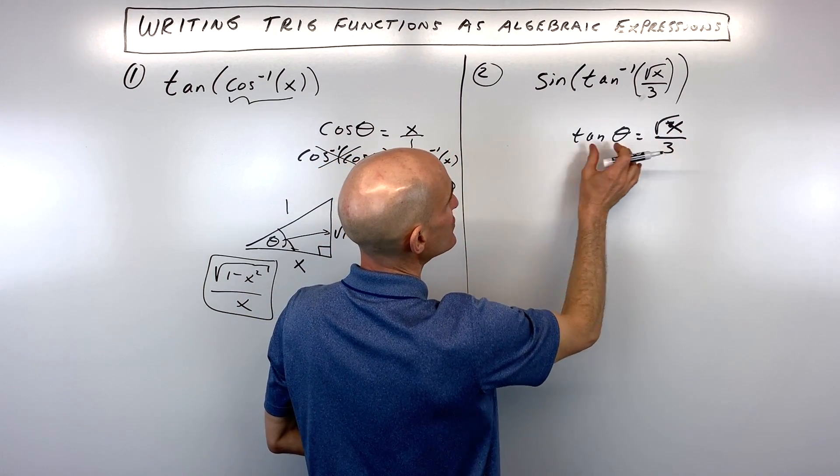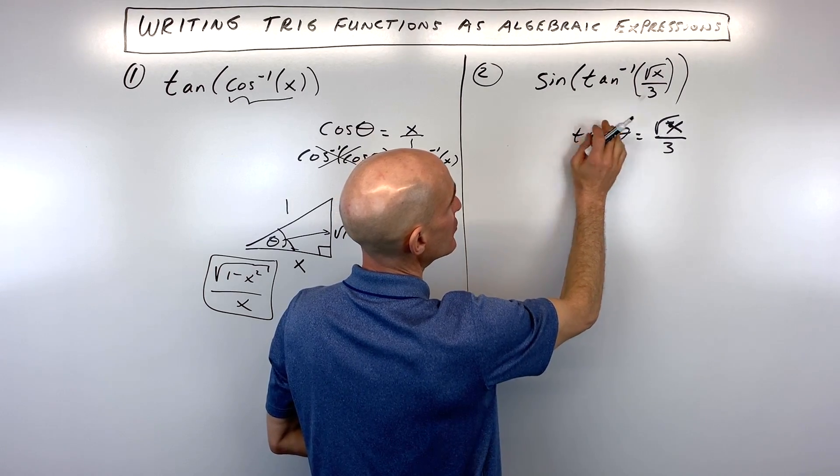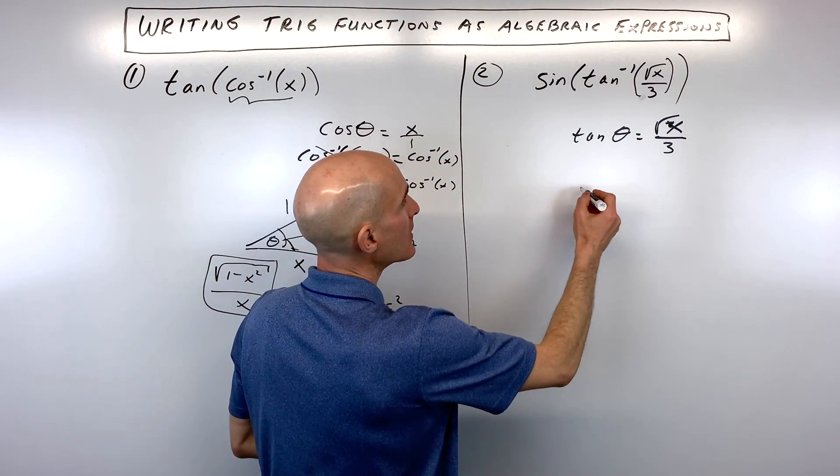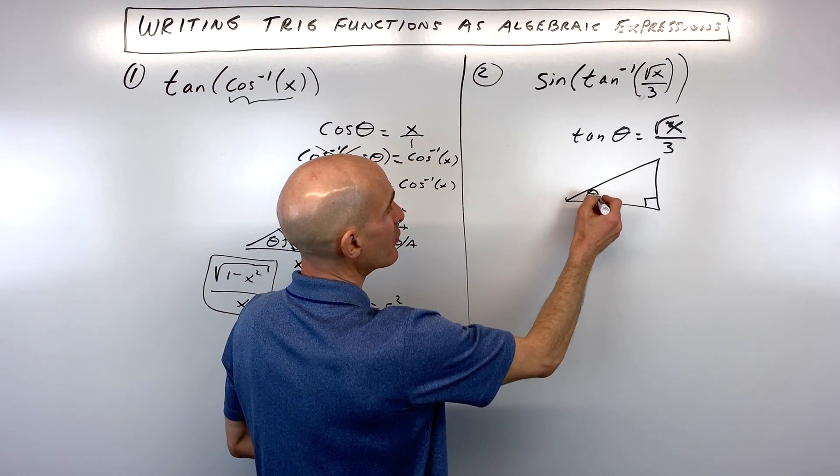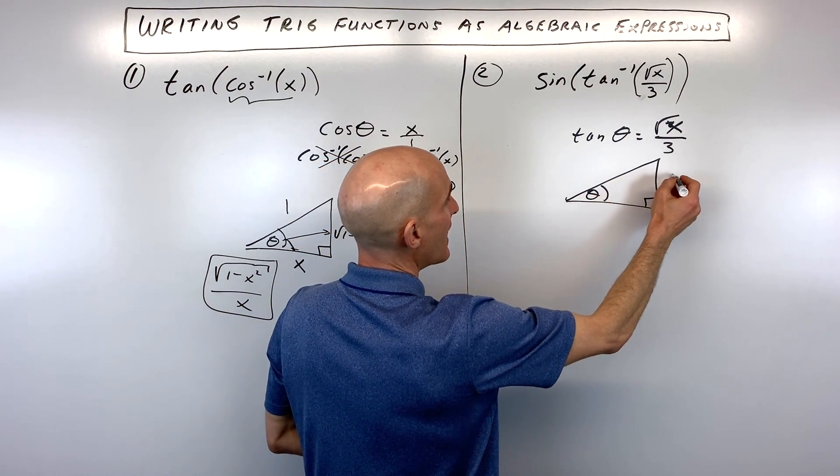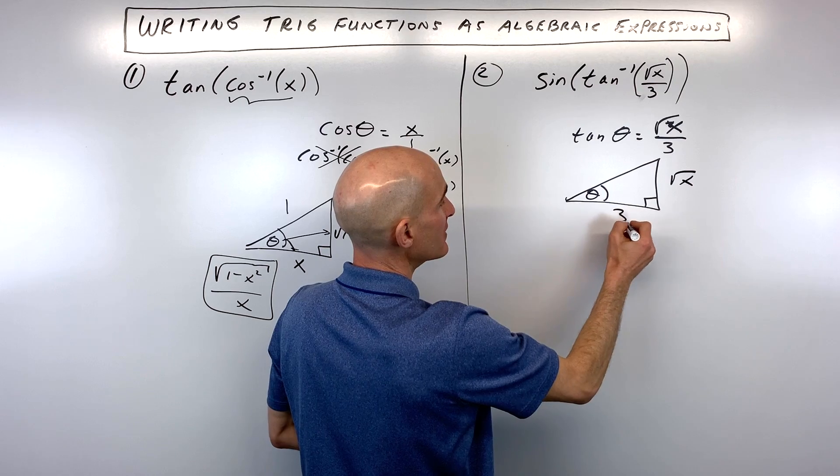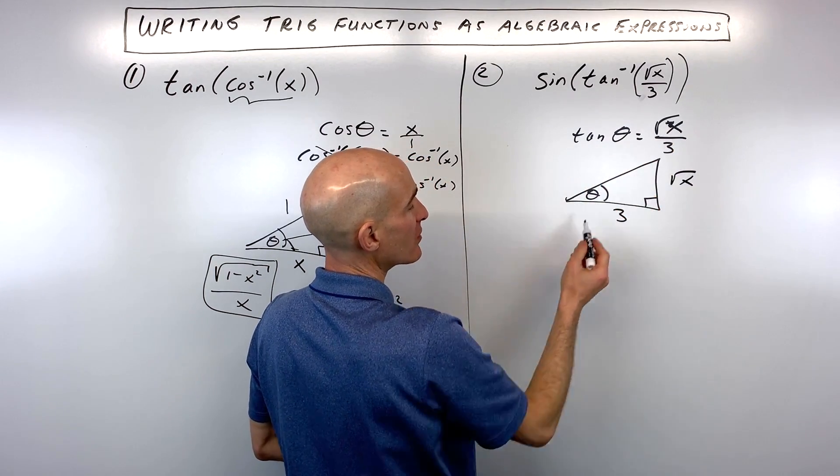See, because if we take the tangent inverse of both sides, that's going to be theta equals tangent inverse of x over three. So we're going to go ahead and construct our triangle now, right triangle. Here's our angle theta. Tangent is the opposite side over the adjacent side. So that's how we get square root of x over three.